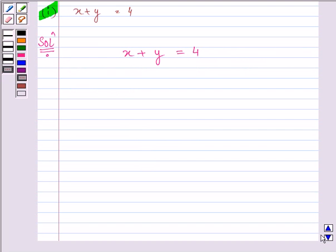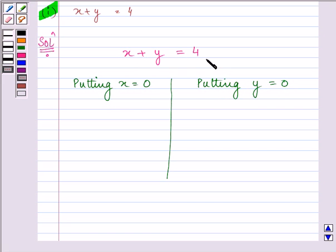first of all we need to find a few points. We will get it by first putting the value of x as 0 and then putting the value of y as 0 in the above equation.